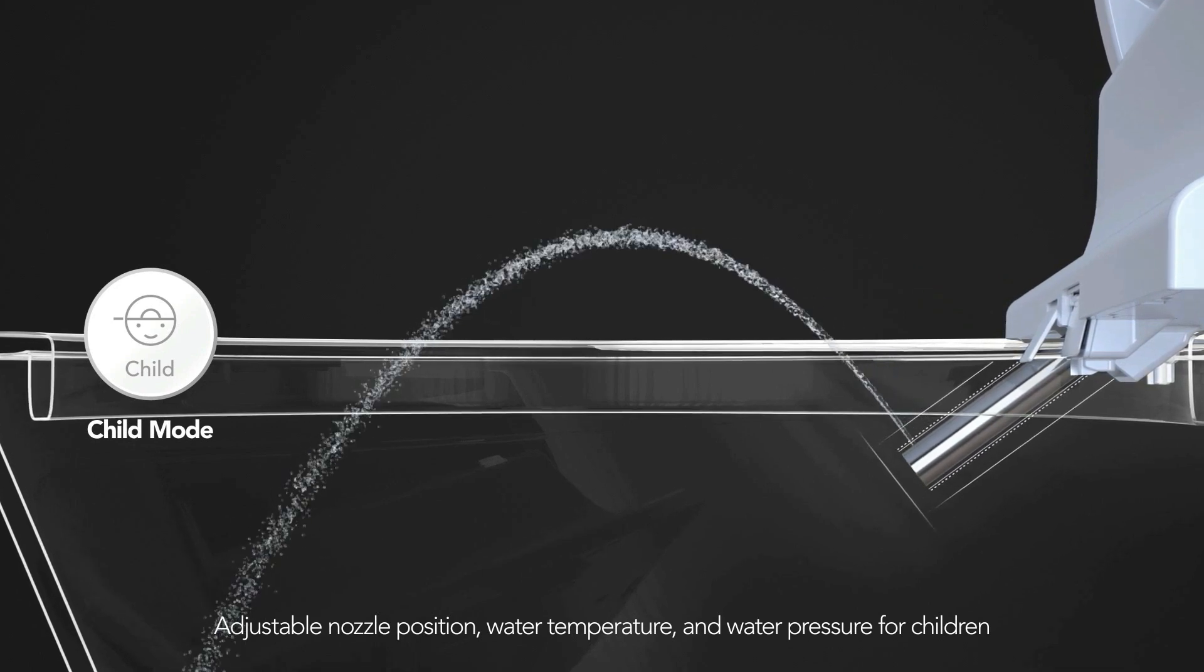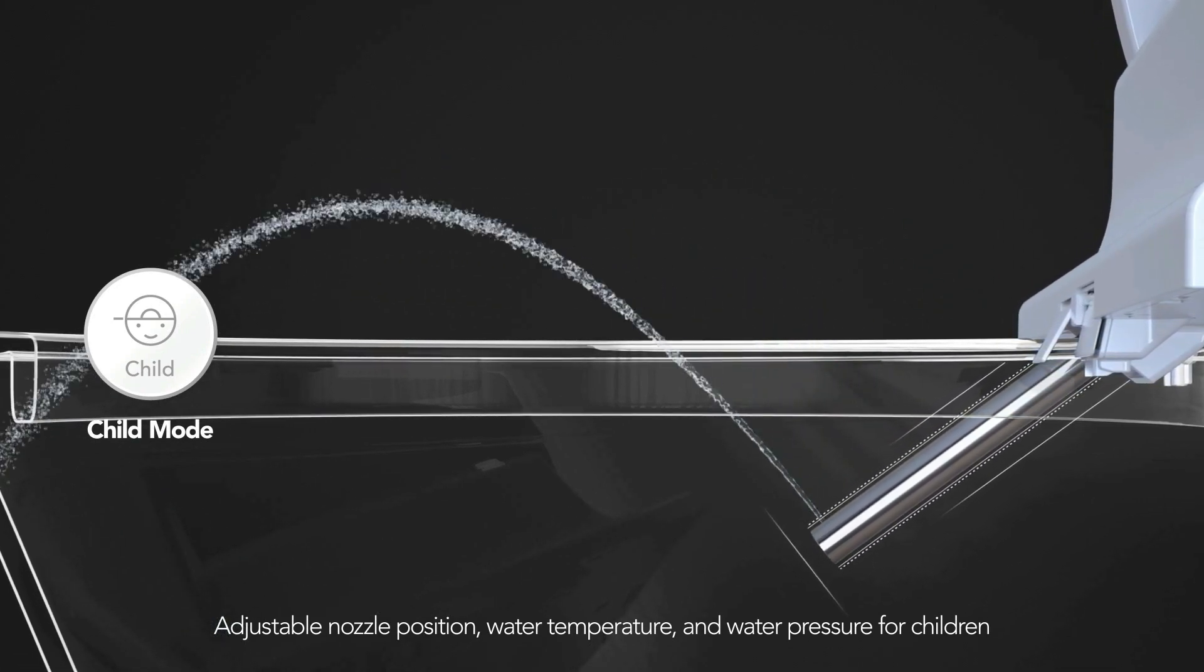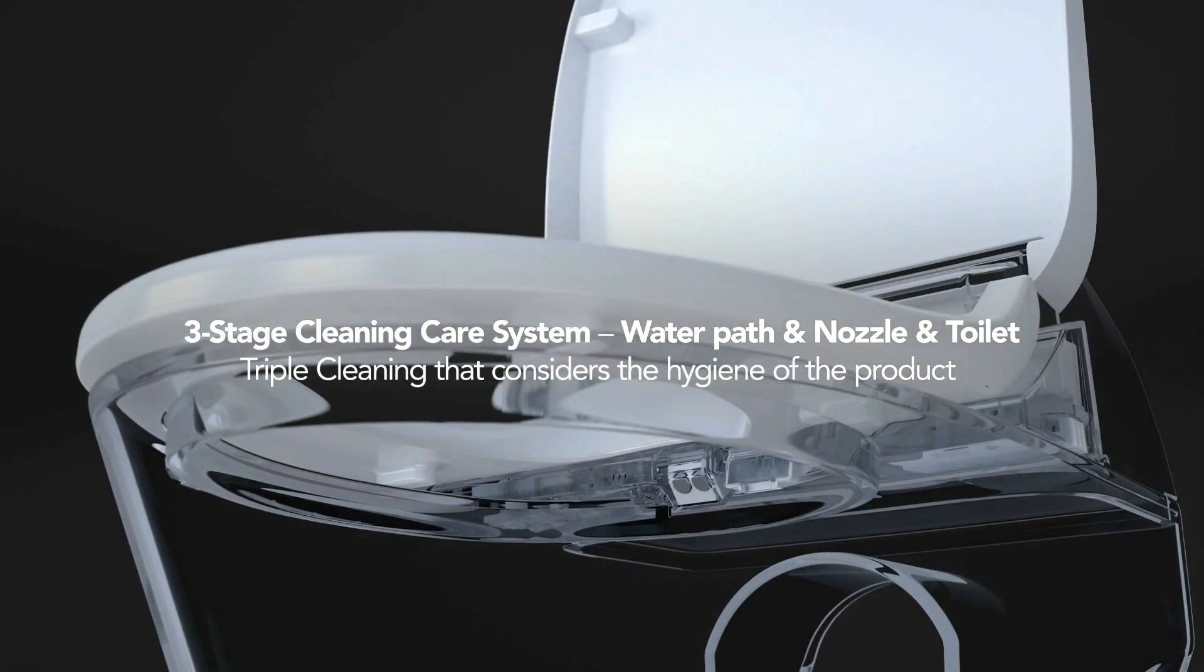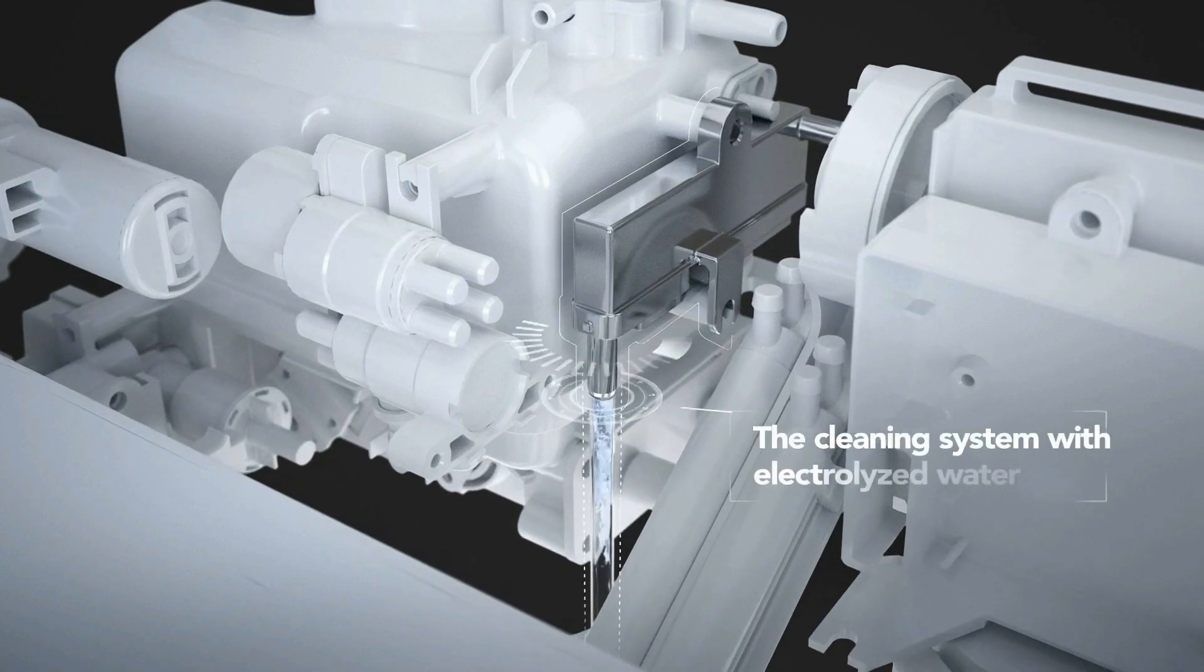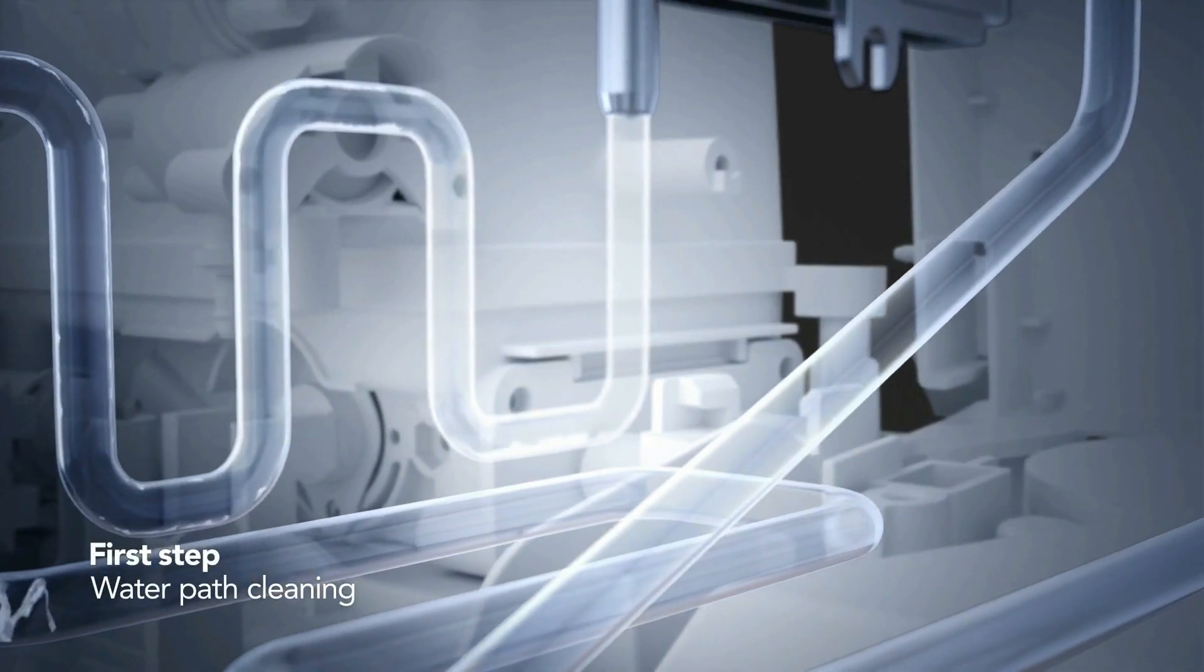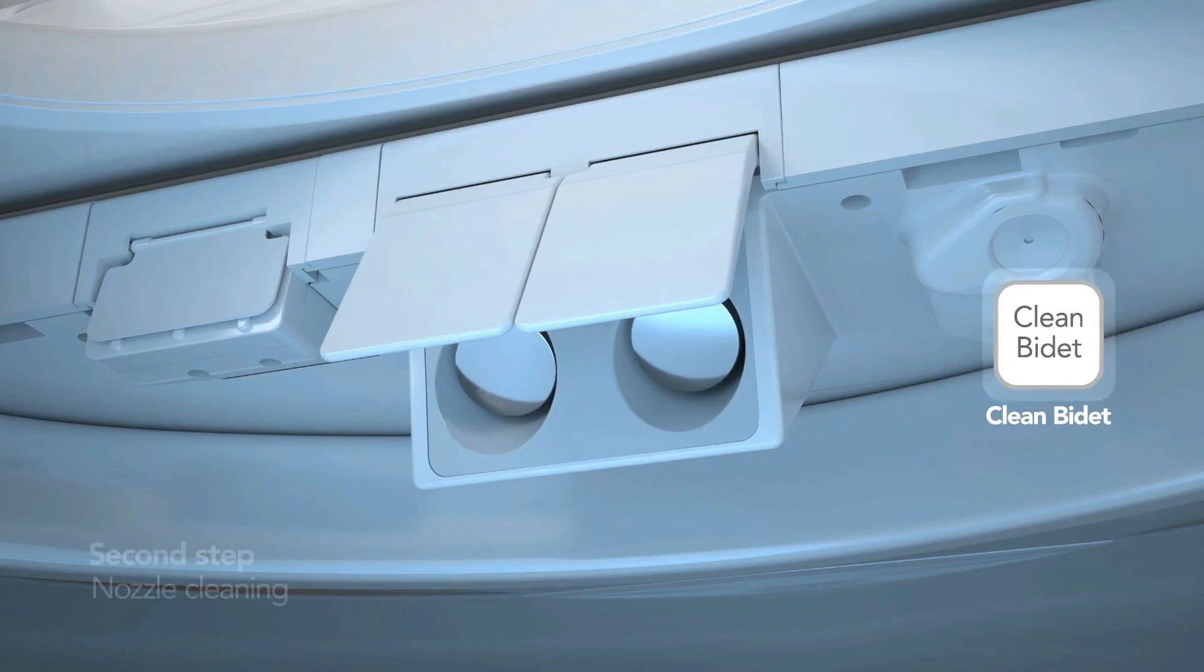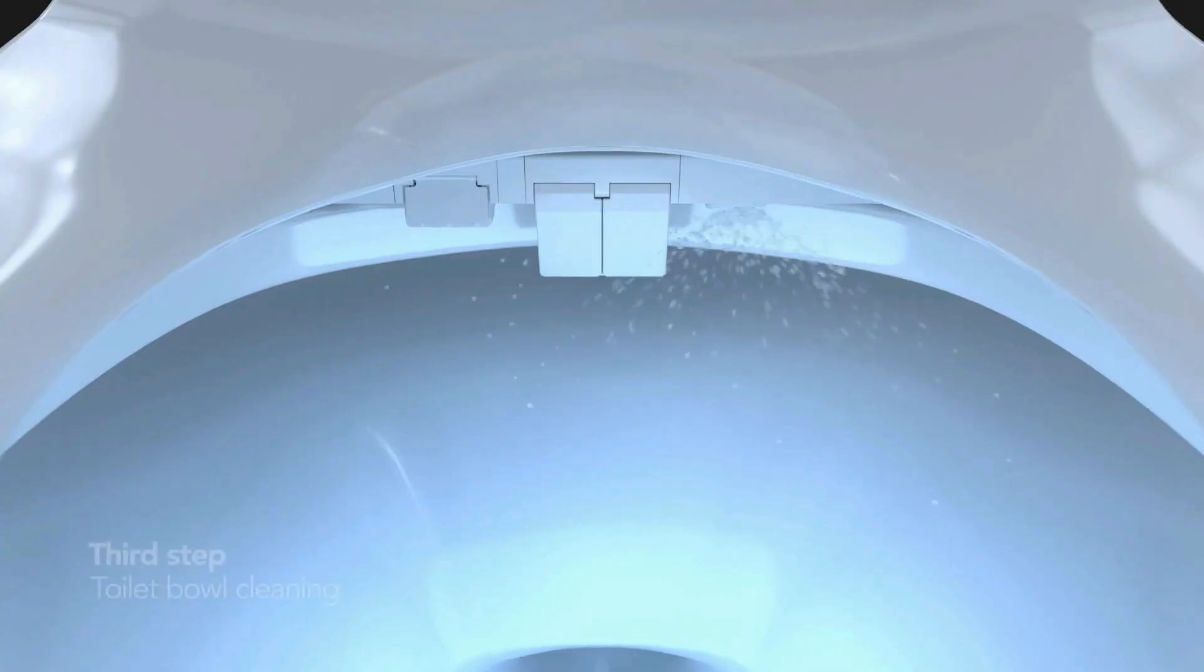The unit mounts directly onto your existing toilet bowl and is powered using a standard outlet. With an eco mode function to reduce energy use, the built-in ecosystem switches the bidet to standby mode when not in use to save energy. Built to withstand sustained low-pressure spray, making it easier to keep safe and sanitary.